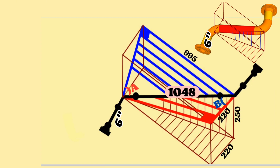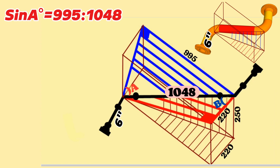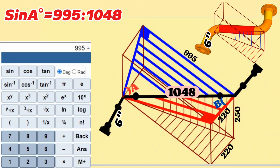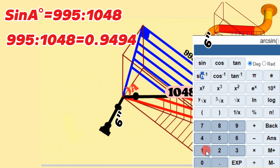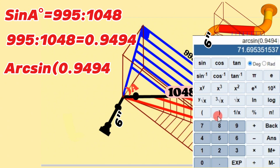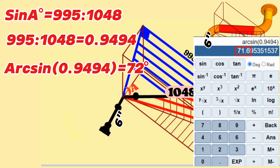Let's start calculating the cutting angle of the lower elbow first. In the blue right triangle, one of the perpendicular sides — the length of the opposite side — is 995 millimeters. The length of the hypotenuse is 1048 millimeters. According to the trigonometric function, sin A degrees equals 995 divided by 1048. We find that 995 divided by 1048 equals 0.9494 using a calculator. Using the calculator we find that arcsin 0.9494 is approximately equal to 72 degrees. So the cutting angle of the lower elbow is 72 degrees.